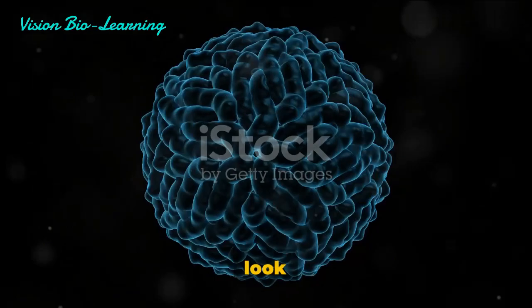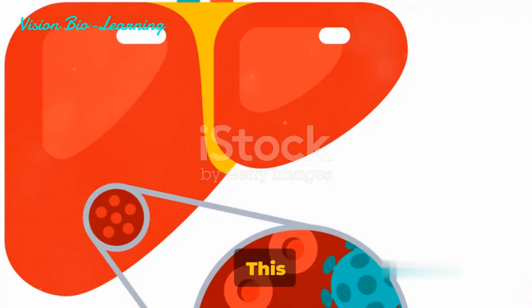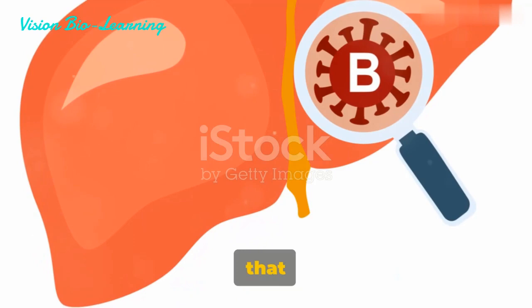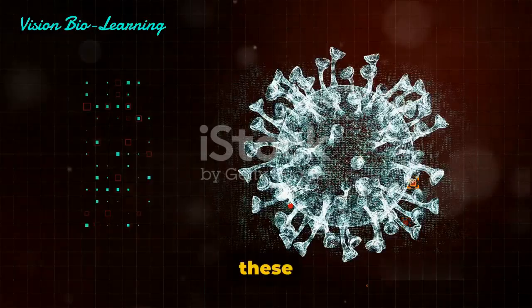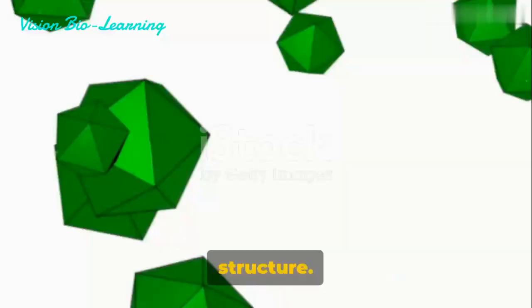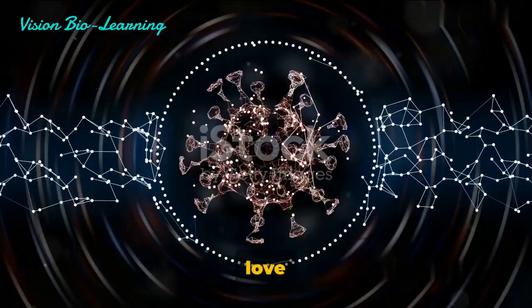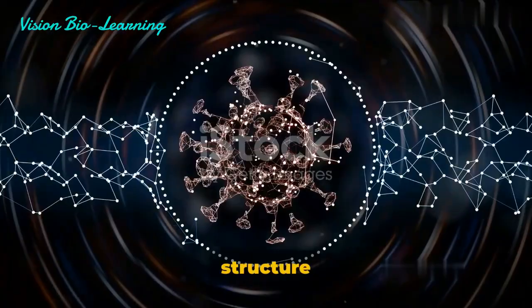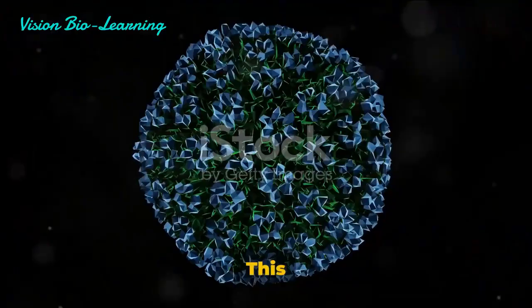Let's look at some examples of icosahedral viruses. The hepatitis B virus has an icosahedral structure — this virus, which can cause serious liver disease, is one of many that utilize the icosahedral structure's benefits. Other examples include the dengue virus, parvovirus, rhinovirus, human papillomavirus, and herpesvirus. Despite their differences in terms of the diseases they cause, they all share the icosahedral structure. With their 20 equilateral triangular faces, icosahedrons offer a balance between stability and efficiency, allowing viruses to protect their genetic material while minimizing the number of different proteins they need to encode.